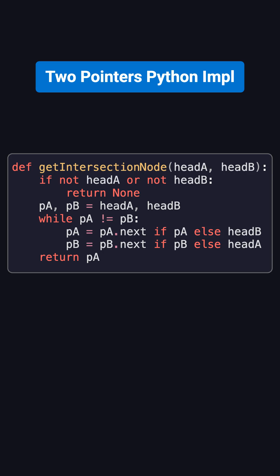Here's the Python implementation of this third approach. The code is very clean. We create two pointers, pA and pB. In a loop, they keep moving forward, and if either pointer reaches the end, it switches to the head of the other list.